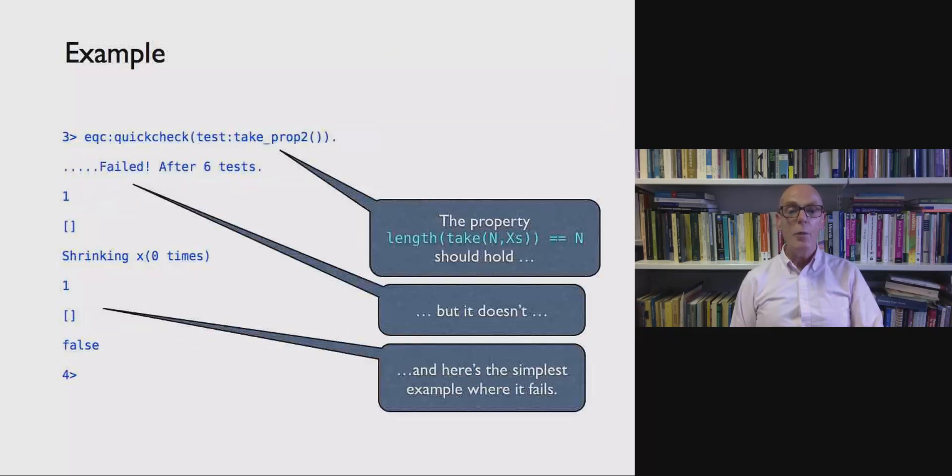Let's see what happens if we try and test that property. We see there's a failure. And what you see is a counterexample. And in fact that counterexample is the simplest possible one. So the process of shrinking to find a simpler counterexample just leaves us with the same data. And what this says is that the number 1 and the empty list give the result false. Because if you take one element from the empty list you don't get something of length 1.